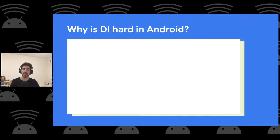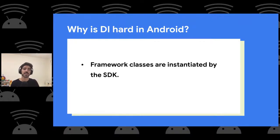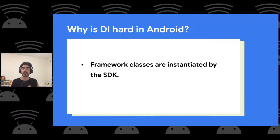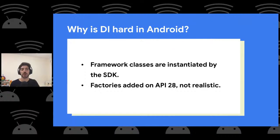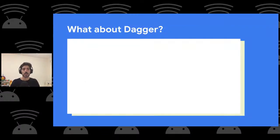Dependency injection is quite hard in Android because the framework classes are instantiated by the Android SDK. You don't have access to the constructor of an Activity — you have to call startActivity from a context. Some factories were added on API 28, like fragment factories, but it's not realistic to have a minimum SDK version of 28, so we recommend Dagger or Hilt.